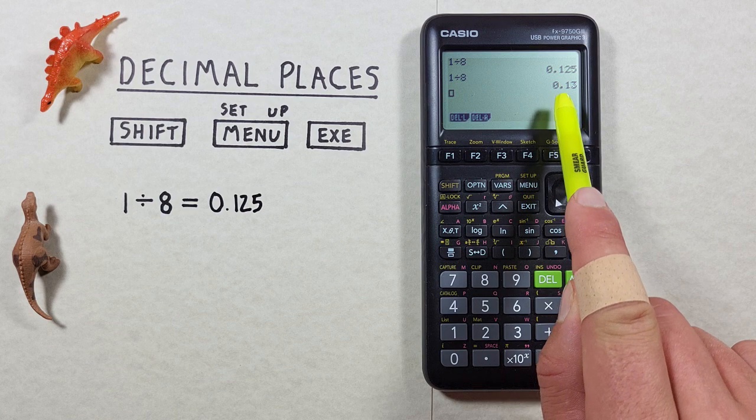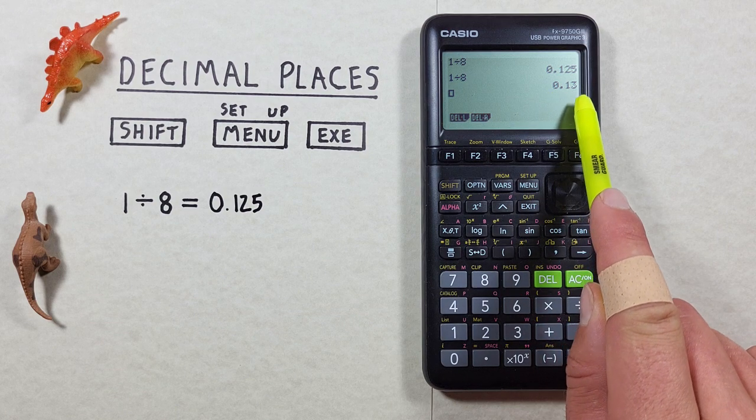Now if we do 1 divided by 8 we see it gives us 0.13, so our 0.125 has been rounded up to two decimal places and that 2 has been rounded to a 3.